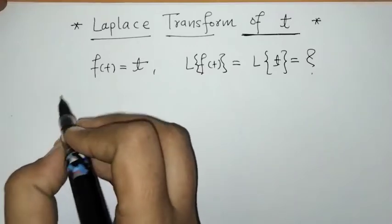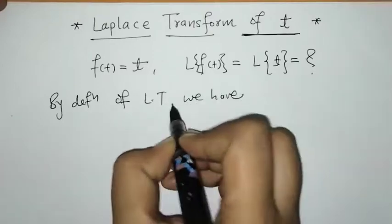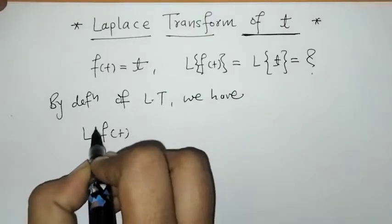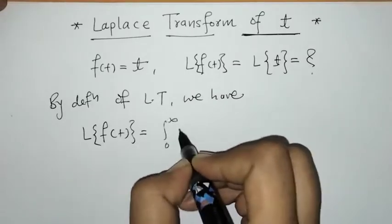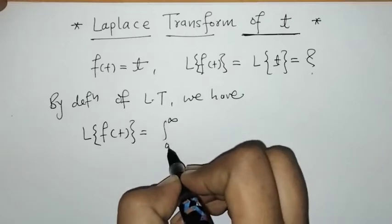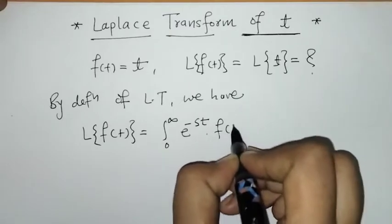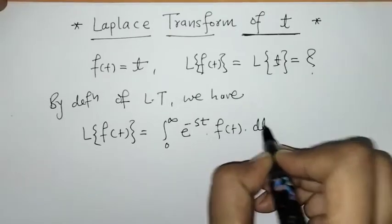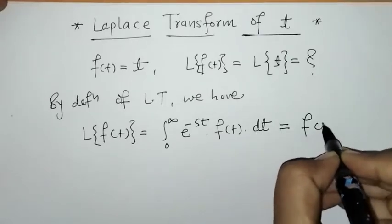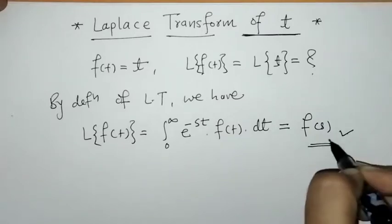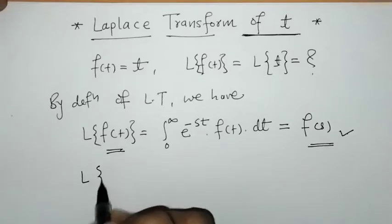First we will write down the definition of Laplace transform. When we have a function of t, we can find its Laplace transform using this definition. Here we have the integral within limits 0 to infinity of e raised to minus st times f(t), with integration with respect to t. When we solve this integration, we get a function of s, and this function of s is called the Laplace transform of f(t).